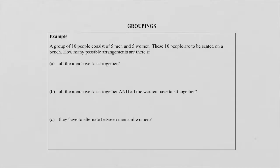Let me explain this whole concept of grouping. The example we're going to look at involves five males and five females — a group of ten people. We want to arrange them and see how many arrangements are possible.